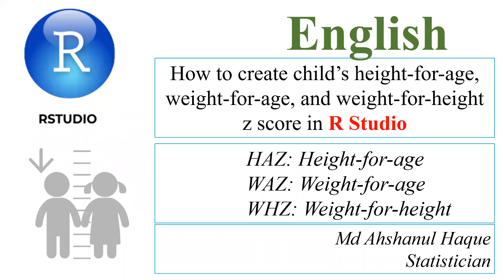Assalamu alaikum and welcome to a new presentation on how to create height-for-age, weight-for-age, and weight-for-height Z-scores in RStudio. In the previous session, I discussed the calculating procedure of these indicators using STATA, but today I am going to discuss how to create these indicators in RStudio.